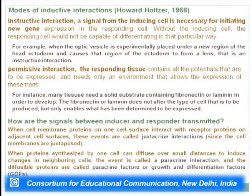How are signals between inducer and responder transmitted? There are two main ways. First, when cell membrane proteins on one cell surface interact with receptor proteins on adjacent cell surfaces, these are called juxtacrine interactions since the cell membranes are juxtaposed. Second is by paracrine interactions: proteins synthesized by one cell can diffuse over small distances to induce changes in neighboring cells; these diffusible proteins are called paracrine factors or growth and differentiation factors (GDFs).